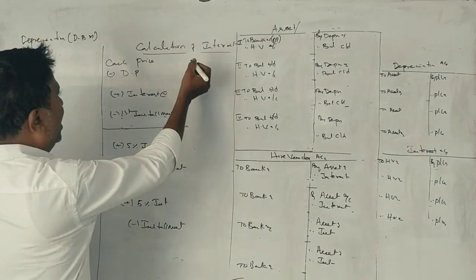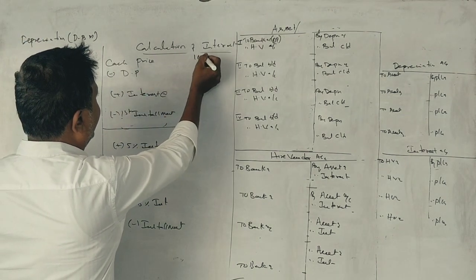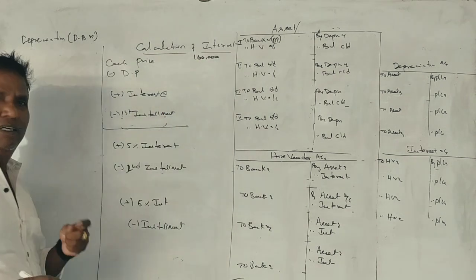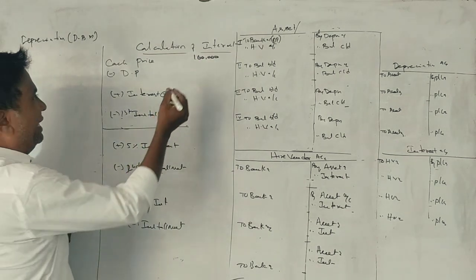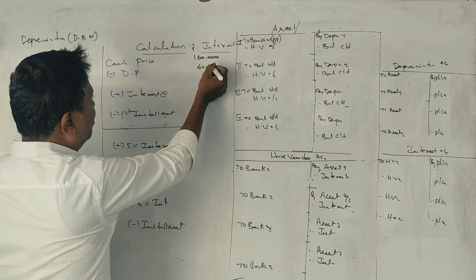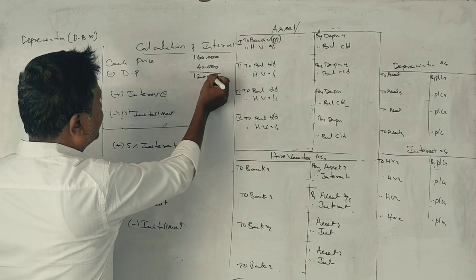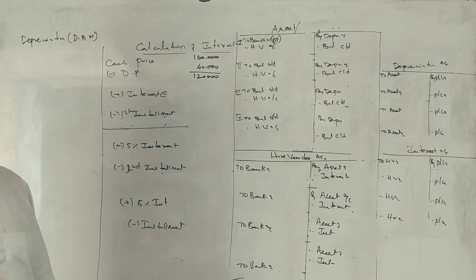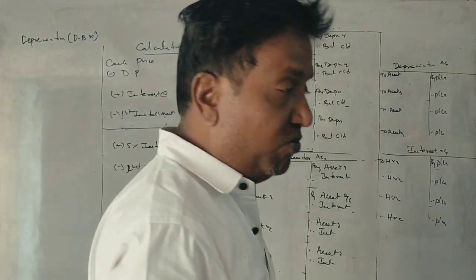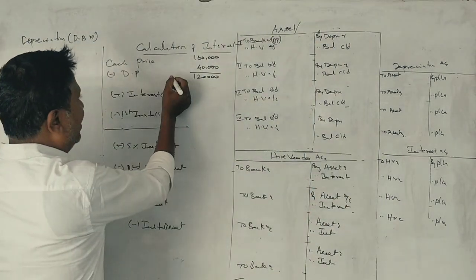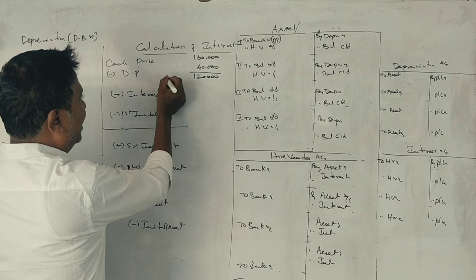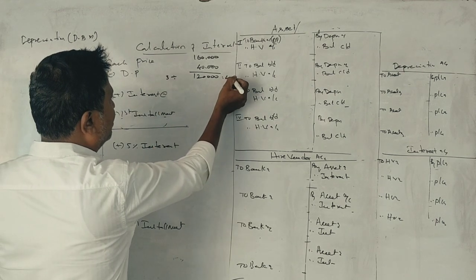Here, cash price is one lakh sixty thousand. Down payment is how much? Forty thousand. The balance? One lakh twenty thousand. Three equal installments means how much? Divided by three, what is the case? One lakh twenty divided by three. Correct.